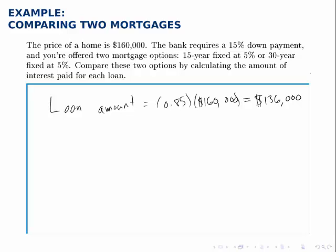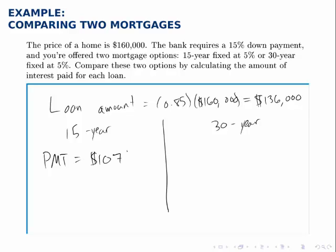So we have two options, both at 5% interest — one for 15 years and one for 30 years. For both of them the formula for calculating the payment is exactly the same except for t: on the left side t will be 15, on the right side t will be 30. The payment for the 15-year mortgage is $1,075.48 each month, and the 30-year mortgage has a monthly payment of $730.08.